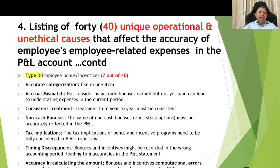Type 3, employee bonus and incentives: there are 7 causes attributed to these. One is accurate categorization. Two is accrual mismatch: not considering accrued bonuses earned but not yet paid can lead to understating expenses in the current period. Three is consistent treatment from year to year. Four is non-cash bonuses: the value of non-cash bonuses such as stock options must be accurately reflected in the P&L. Five is tax implications: the tax implications of bonus and incentive programs need to be fully considered. Six is timing discrepancies: bonuses might be recorded in the wrong accounting period. Seven is accuracy in calculating the amount: computational errors can result in overstatement or understatement of expenses, especially when bonus computation is complex.